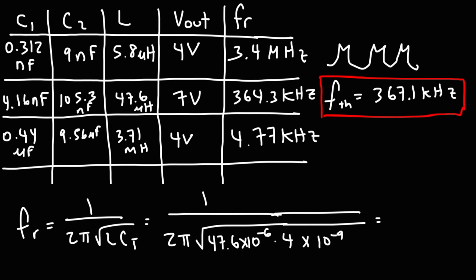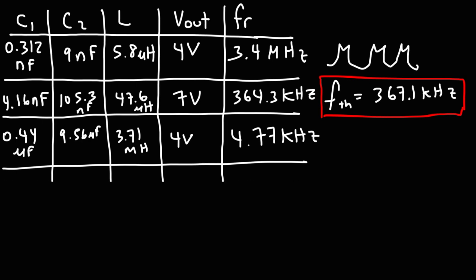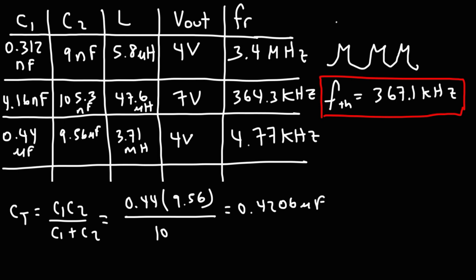Now granted, for the other trials, I didn't get good numbers like that one. For the third trial, it deviated from the theoretical value quite significantly. So I'm going to calculate CT again. It's 0.44 times 9.56 divided by the sum of those two numbers, which is 10. And so this is 0.4206 microfarads.